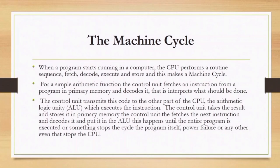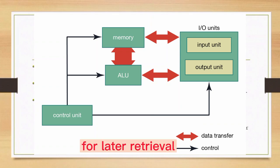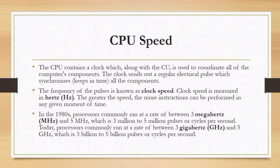For a simple arithmetic function, the control unit fetches an instruction from primary memory and decodes it. The control unit transmits this code to the other parts of the CPU, and then the arithmetic logic unit executes the instructions. The control unit then takes the results and stores them in primary memory.